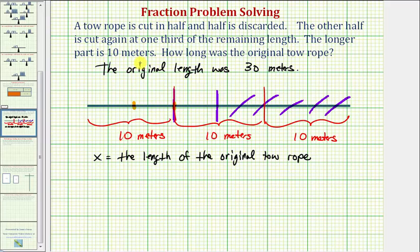So notice how from the remaining half, two thirds of that length would be 10 meters. So from the given information, we could say that one half of two thirds of the original length is 10 meters.